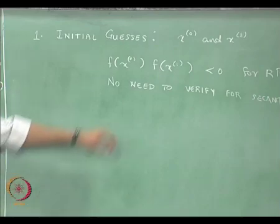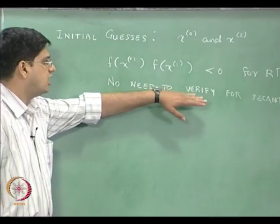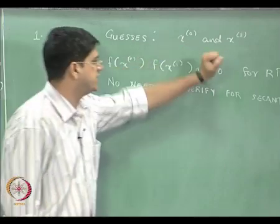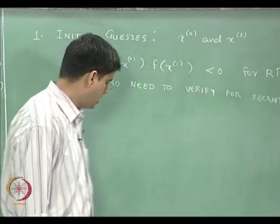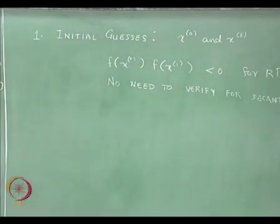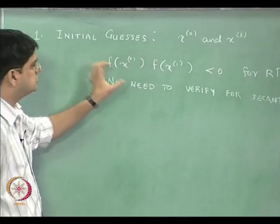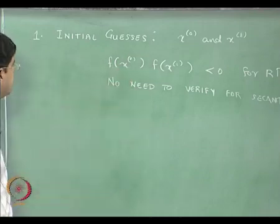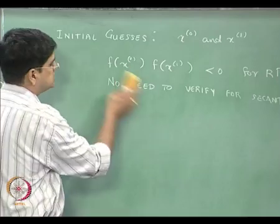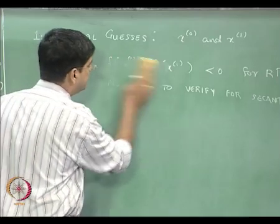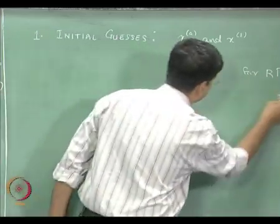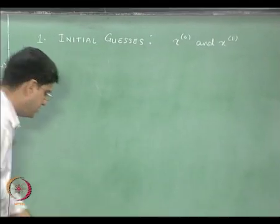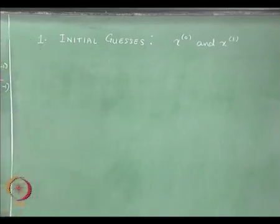That is the difference between the secant and the Regula Falsi method. We do not need to check whether x_0 and x_1 lie on either sides of the true solution x star. That is the initial guess. I will erase this criterion rather than keeping it on the board and cluttering it.